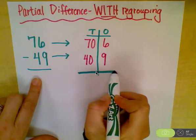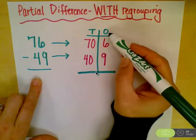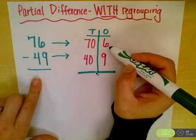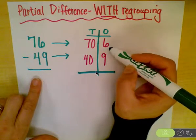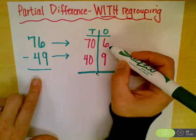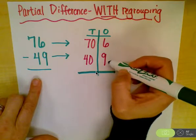So then we draw our equal sign, and this time we're going to start in the ones column. So we're going to ask ourself, can I do 6 minus 9? And if I have 6 apples, can I take away 9? The answer is no.